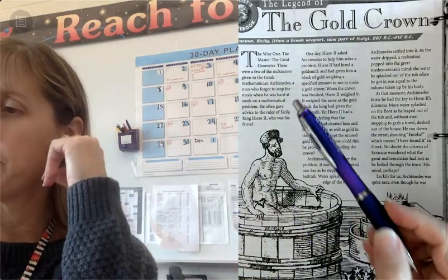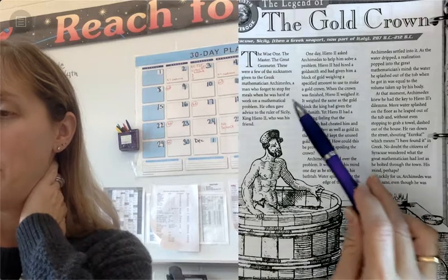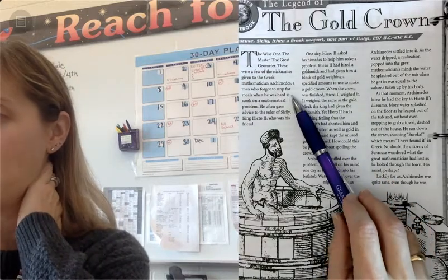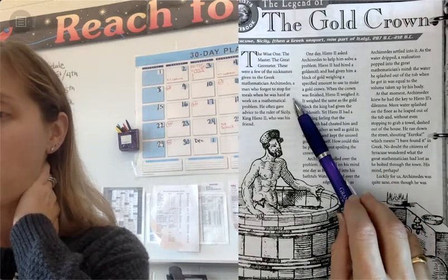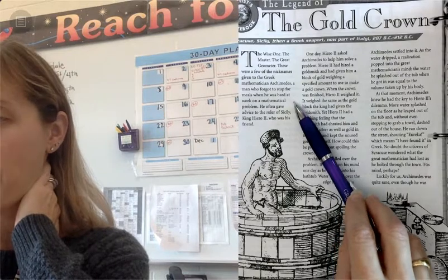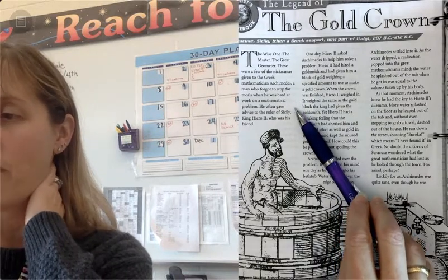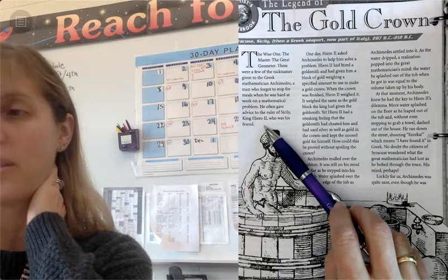There was a man who forgot to stop for meals. And his name was Archimedes. And he was a mathematician. And he was great at math. And so he gave advice often to the ruler of Sicily, who is King Hero, who was his friend.